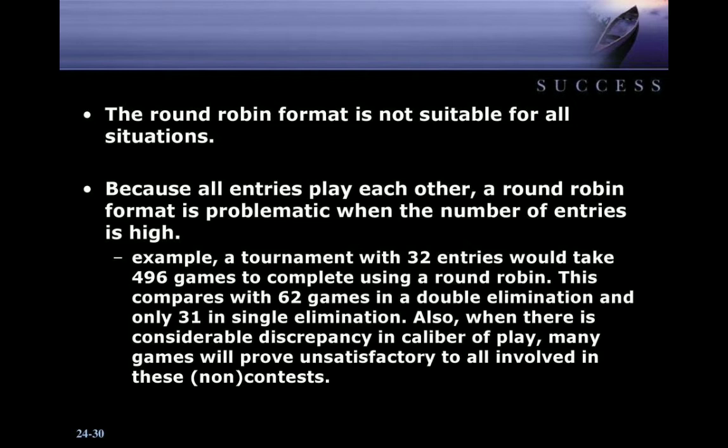The Round Robin format is not suitable for all situations. Because all entries play each other, a Round Robin format is problematic when the number of entries is high. Example: a tournament with 32 entries would take 496 games to complete using a Round Robin, compared with 62 games in double elimination and only 31 in single elimination. Also, when there is considerable discrepancy in caliber of play, the contest may prove unsatisfactory to all involved.